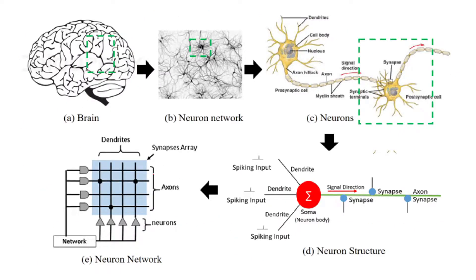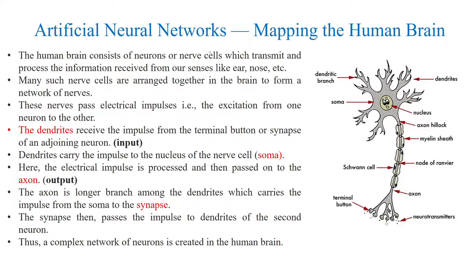The biological neuron is indicated in this slide. The human brain contains a set of neurons or nerve cells which transmit and process information received from our senses like ears, nose, eyes, skin, etc. Many such nerve cells are arranged together in the brain to form a network of nerves. Each nerve passes electrical impulses when excitation occurs from one neuron to another.